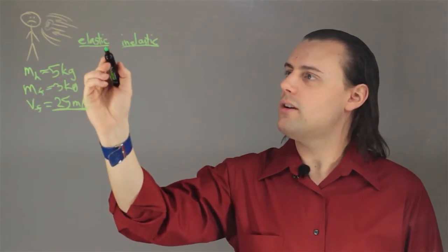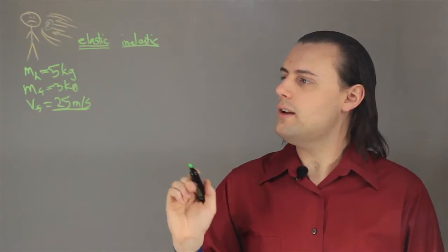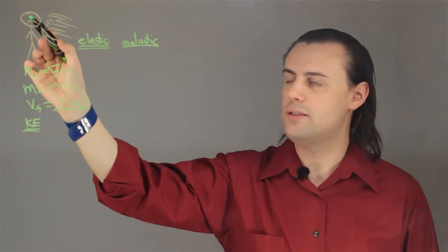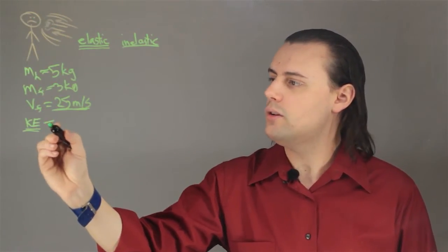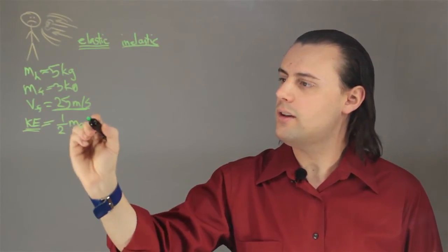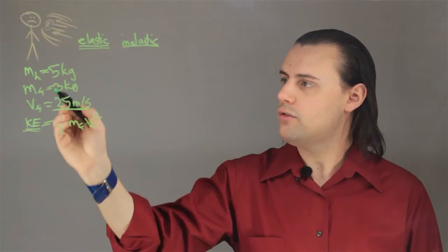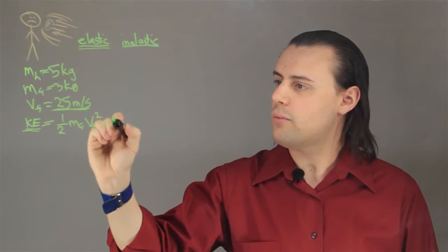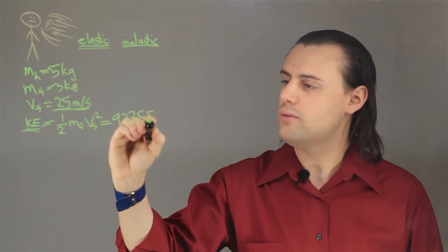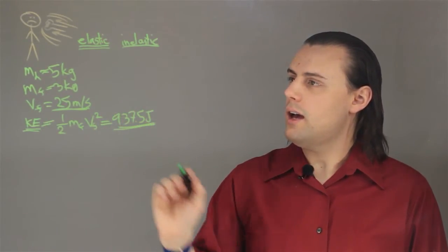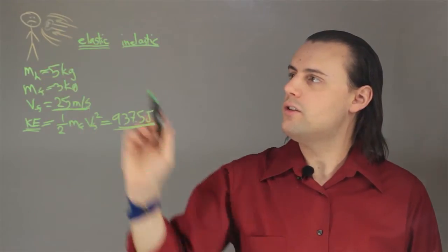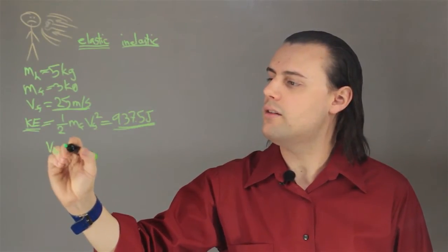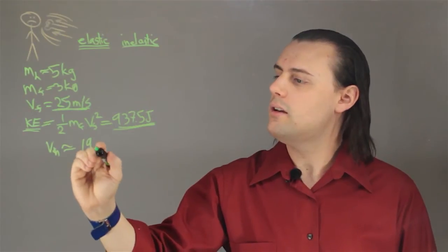We want to consider an elastic collision. The kinetic energy of the fist, well, total kinetic energy, because the head is initially not moving, is going to be given as one-half mass of the fist times velocity of the fist squared. If we plug in these numbers into this expression, we'll get a total kinetic energy of approximately 937.5 joules. And if all of this energy is transferred to the head, then we would get a velocity for the head of approximately 19 meters per second.